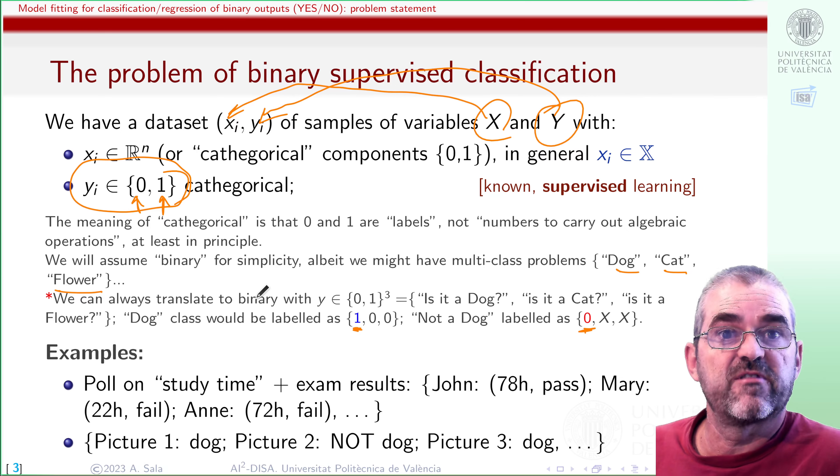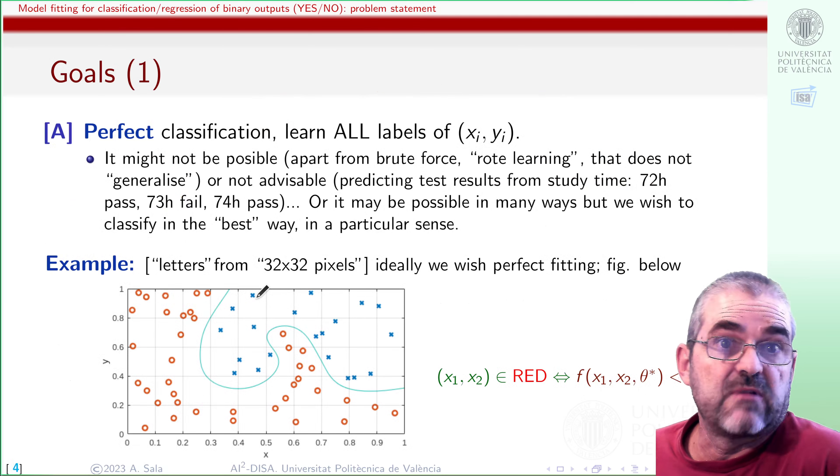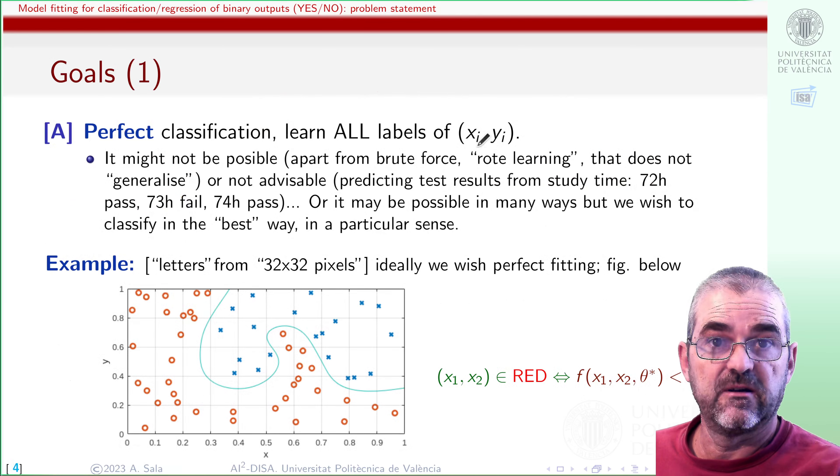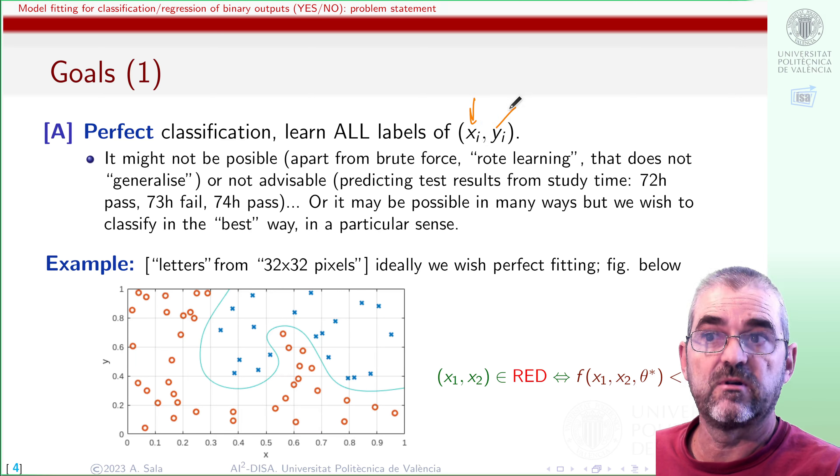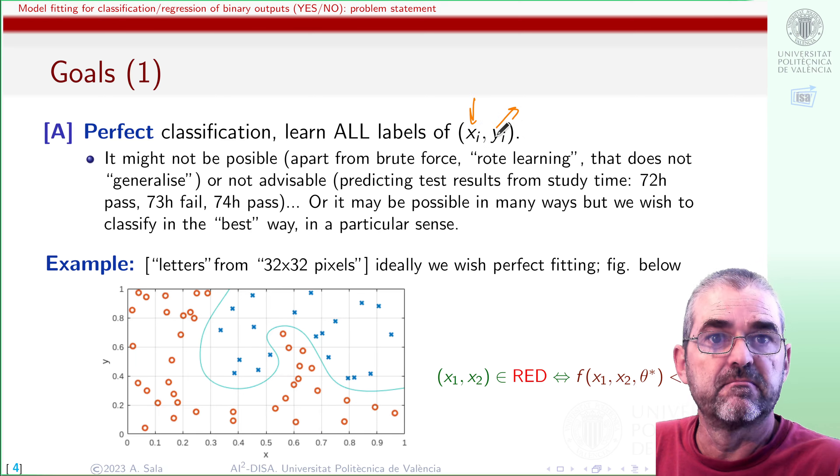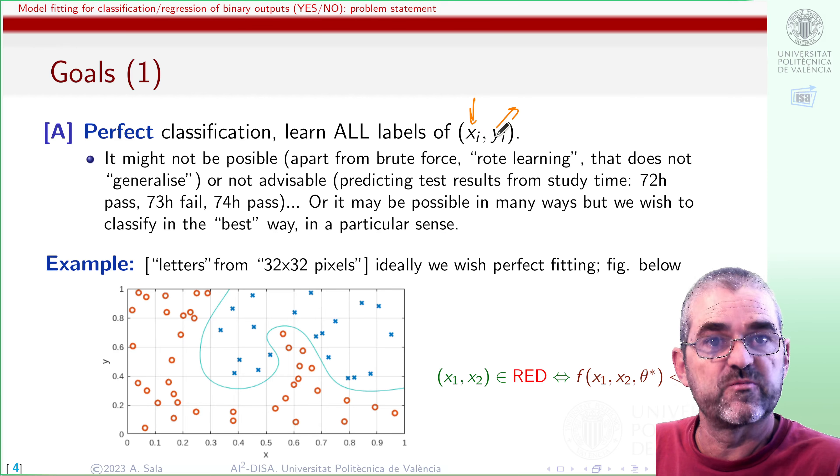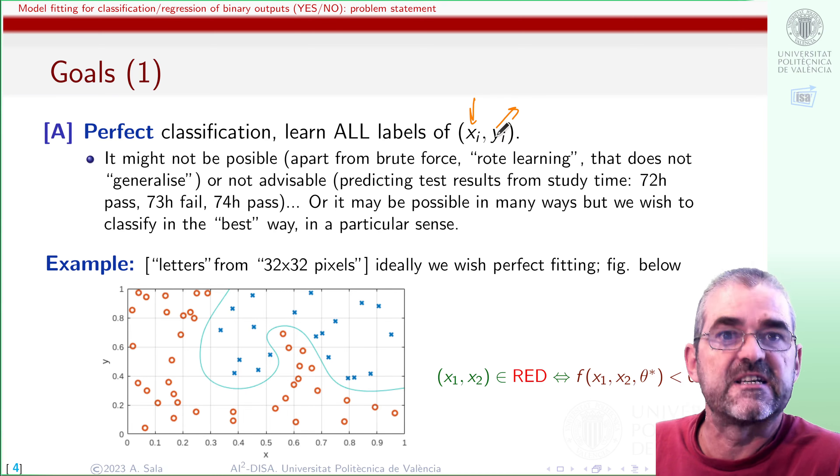Let us further discuss the meaning of these problems in a deterministic way. For instance, in a deterministic setting, we would like, perhaps, a perfect classification. Learning, given each sample X, learning all labels. Of course, one way of doing it will be rote learning. Just memorizing that picture 122 was a picture of a dog. So, when somebody shows me that picture, I must answer, dog, because they told me that the solution to that problem was dog. Okay, you may guess that that is usually useless in machine learning, or artificial intelligence. Rote learning is useless if I change a single pixel of my dog picture. So, we don't want that.